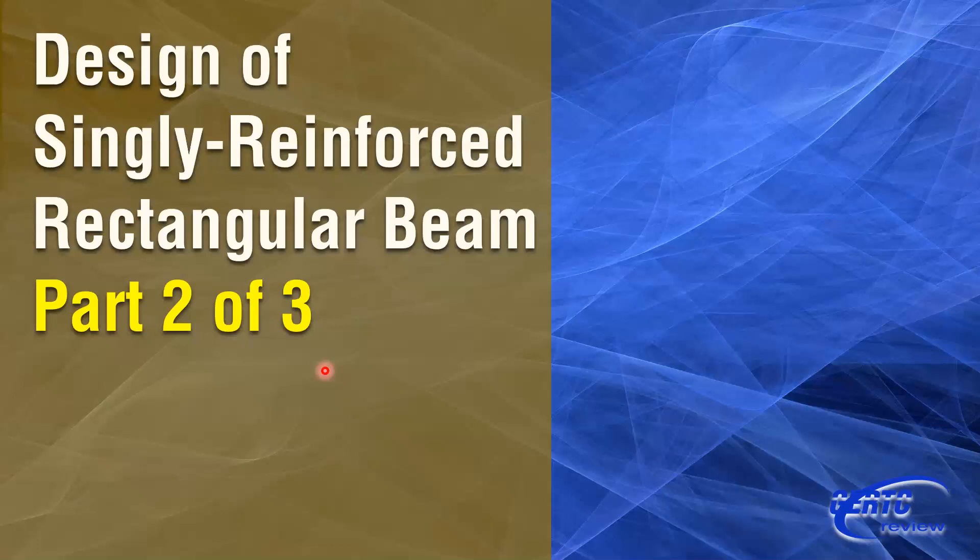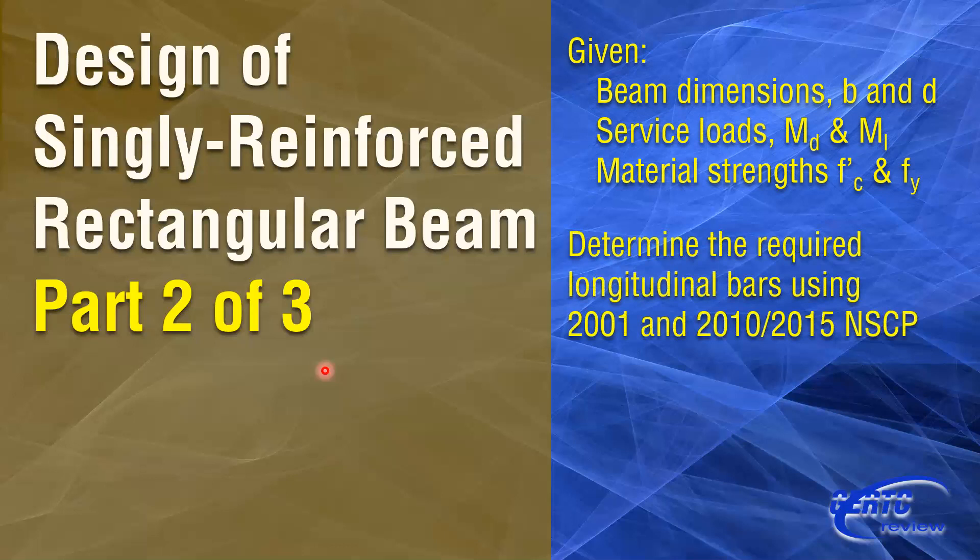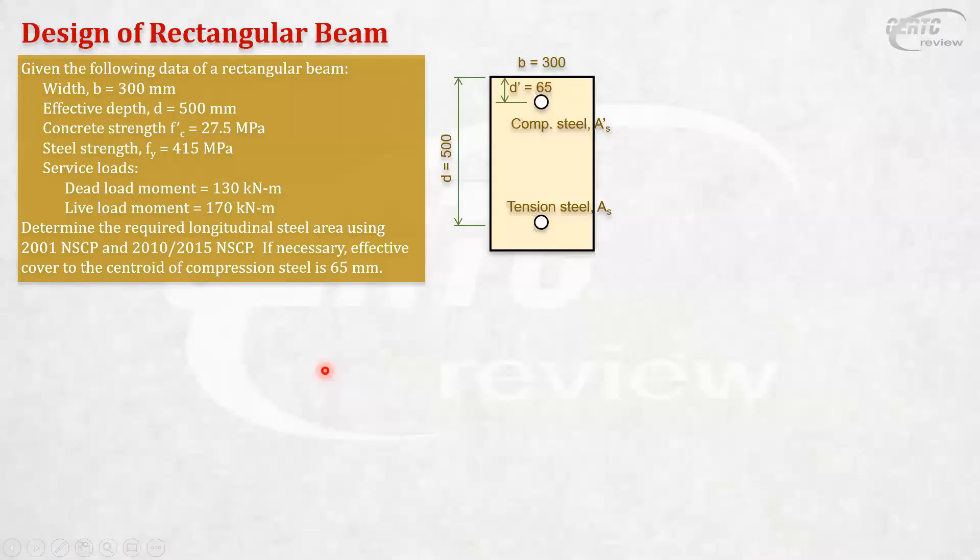The first part was the same design. So, the same given, only in this part, I increased the loads. If you haven't watched part 1 yet, I suggest that you watch part 1 first to understand what we are trying to show you here in this lesson. In the first part, the service loads and moment were small, and everything was singly reinforced. Now, we will repeat the same process. We'll see what happens if the moment and service loads are increased. The dead load here becomes 130 kilonewton meter and the live load is 170 kilonewton per meter.